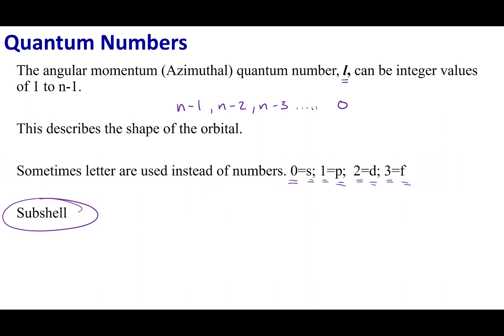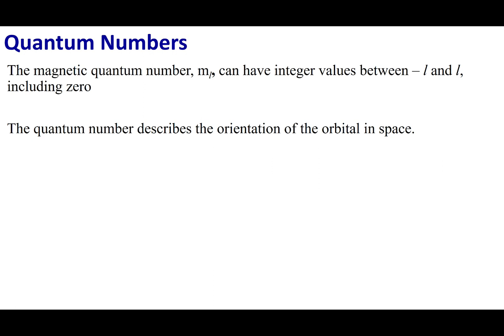The magnetic quantum number is abbreviated M sub L. Like L, M sub L has restrictions — it can be a whole number that is negative, zero, or positive. The possible values of M sub L run from negative L, stepping by whole numbers through zero, all the way to positive L. I'll give you a chart showing these restrictions and how they work, but let's now talk about what L and M sub L tell you about the electron.